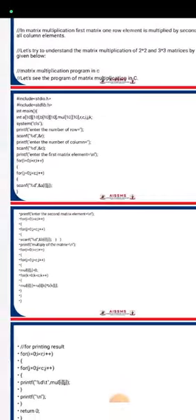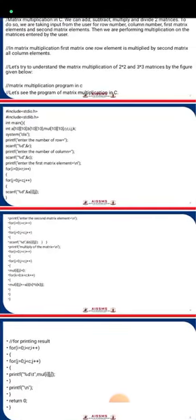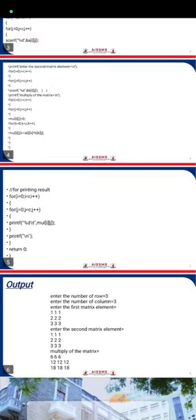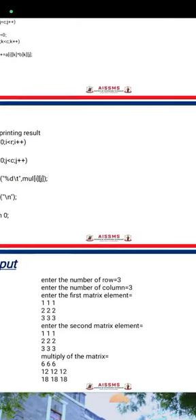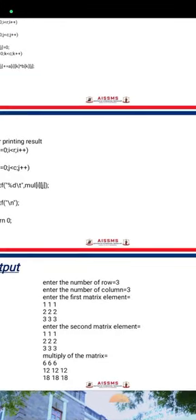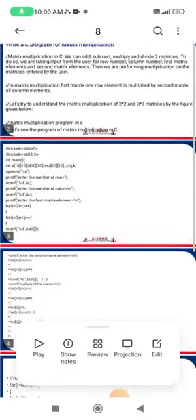The result of multiplying the first matrix row elements by the second matrix column elements is stored in the third variable mul[i][j]. For example output, if the user enters 3 rows and 3 columns, with first matrix elements 1 1 1 2 3 (3x3), and the same dimensions for the second matrix, the multiplication result output is: 2 6 6 6 12 12 10, which is the final output of the matrix multiplication.